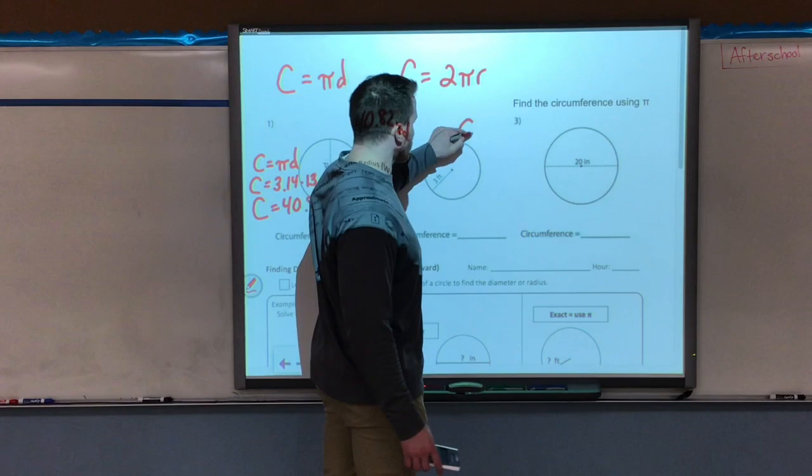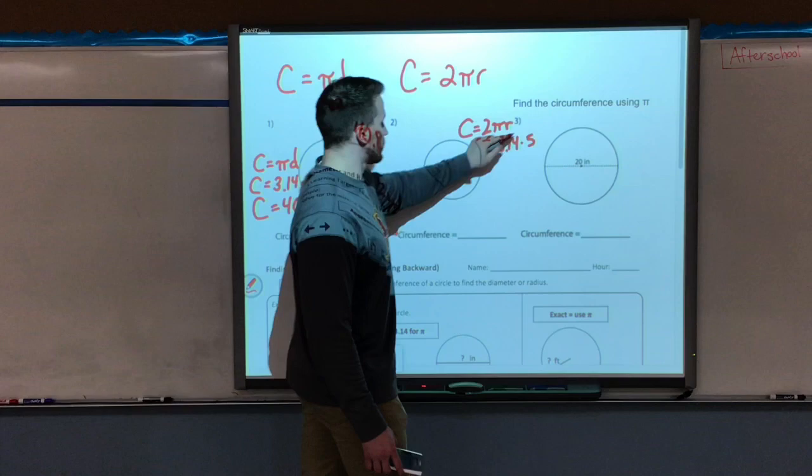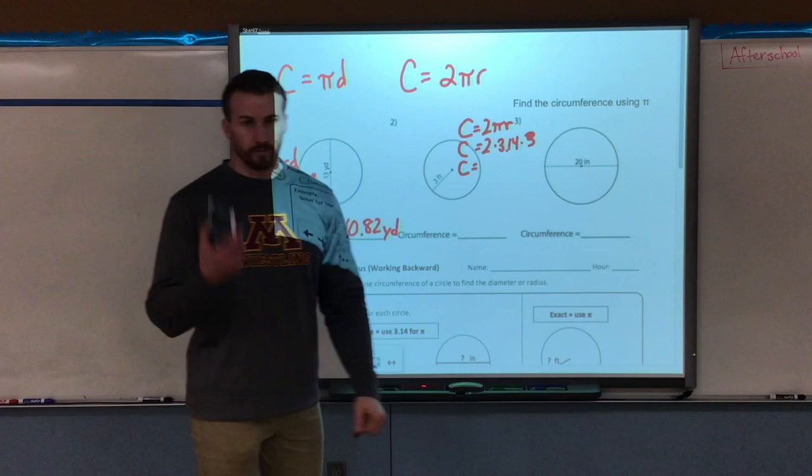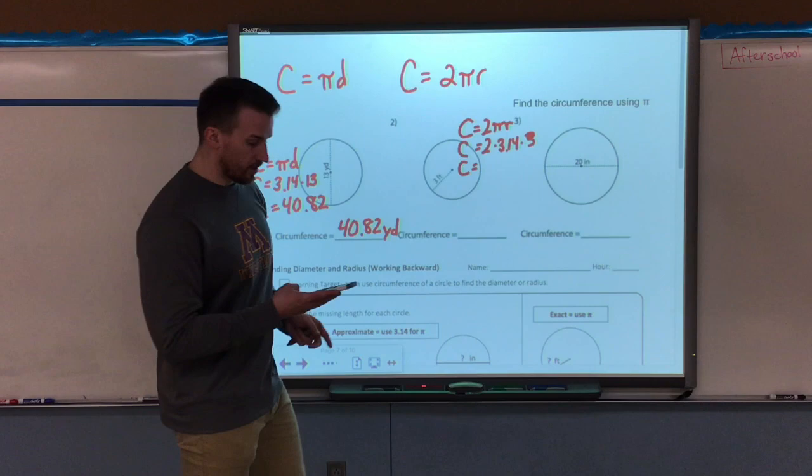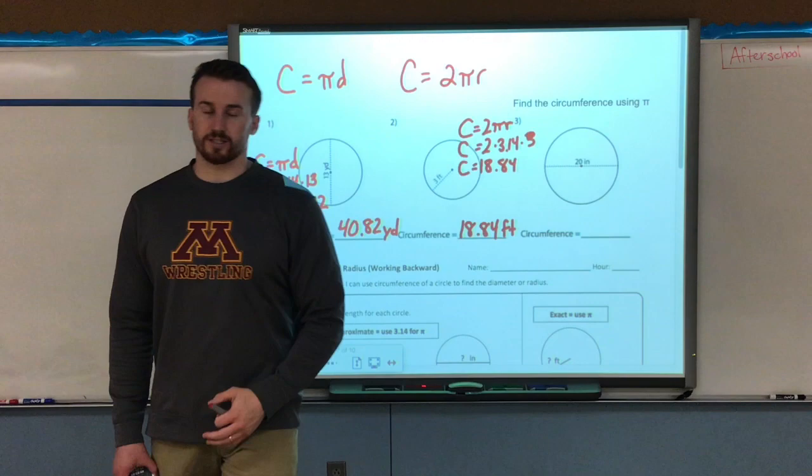Example two: now we have a radius of three feet, so I'm using this formula C equals 2 pi r. I'm replacing pi with 3.14, replace the radius with what I know, which is 3. Then I multiply them all together on my calculator. I take 2 times 3.14 for pi times 3. I get 18.84, and that's in feet.